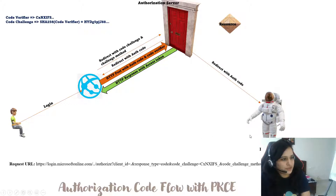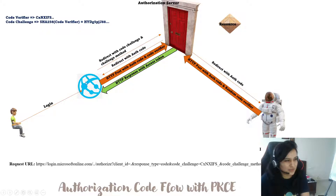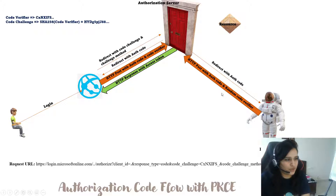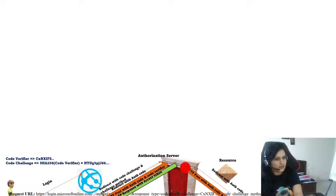When the hacker tries the same attack — obtaining the auth code and sending it to the authorization server — they must also provide a code verifier. Since the hacker doesn't have the original code verifier (which only the application knows), they submit a random one. The server hashes it and compares it to the stored code challenge — they don't match, and the request is rejected.